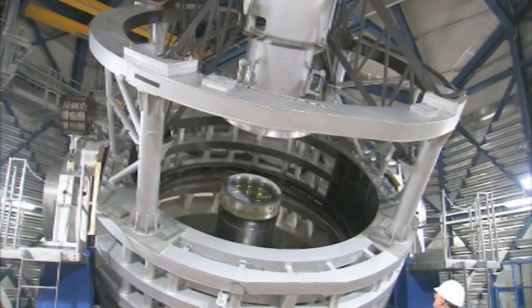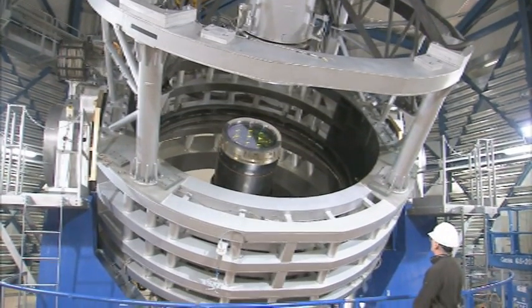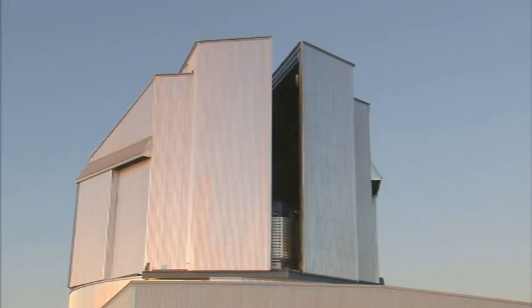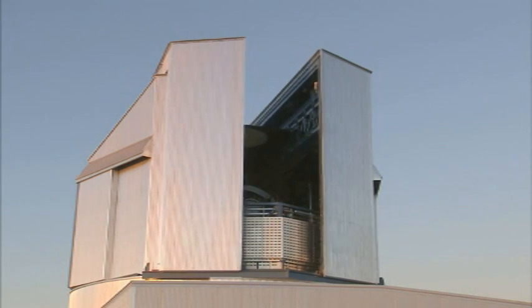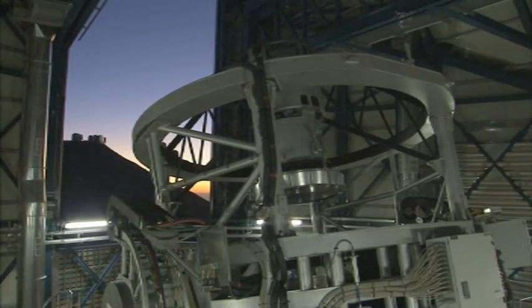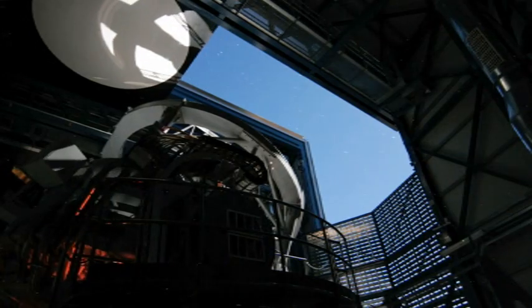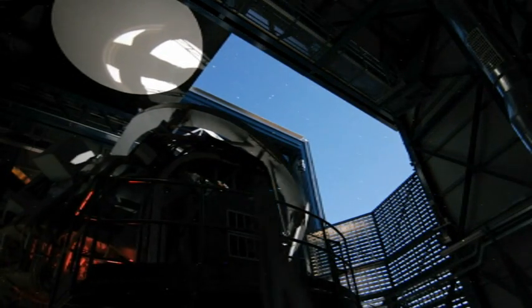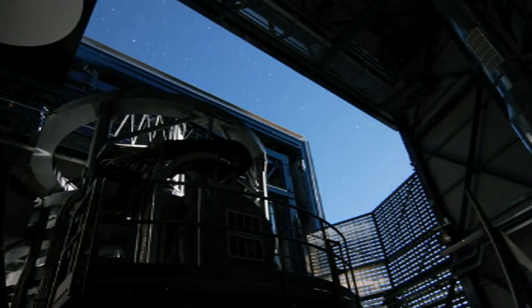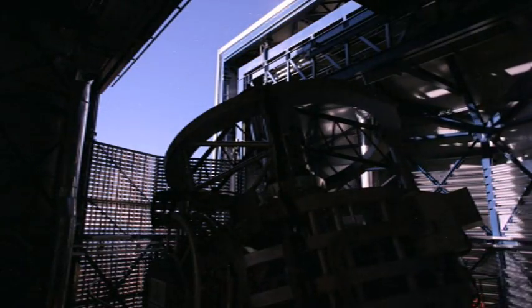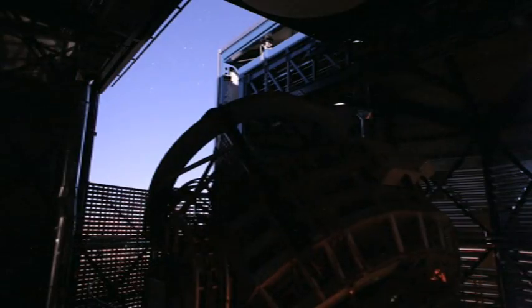The Visible and Infrared Survey Telescope for Astronomy, or VISTA, has taken a spectacular new image that reveals some of the nebula's buried secrets. VISTA is the latest addition to ESO's Paranal Observatory in Chile, and it's the largest survey telescope in the world, with a mirror measuring 4.1 meters in diameter. It's dedicated to mapping the sky in the infrared part of the spectrum.